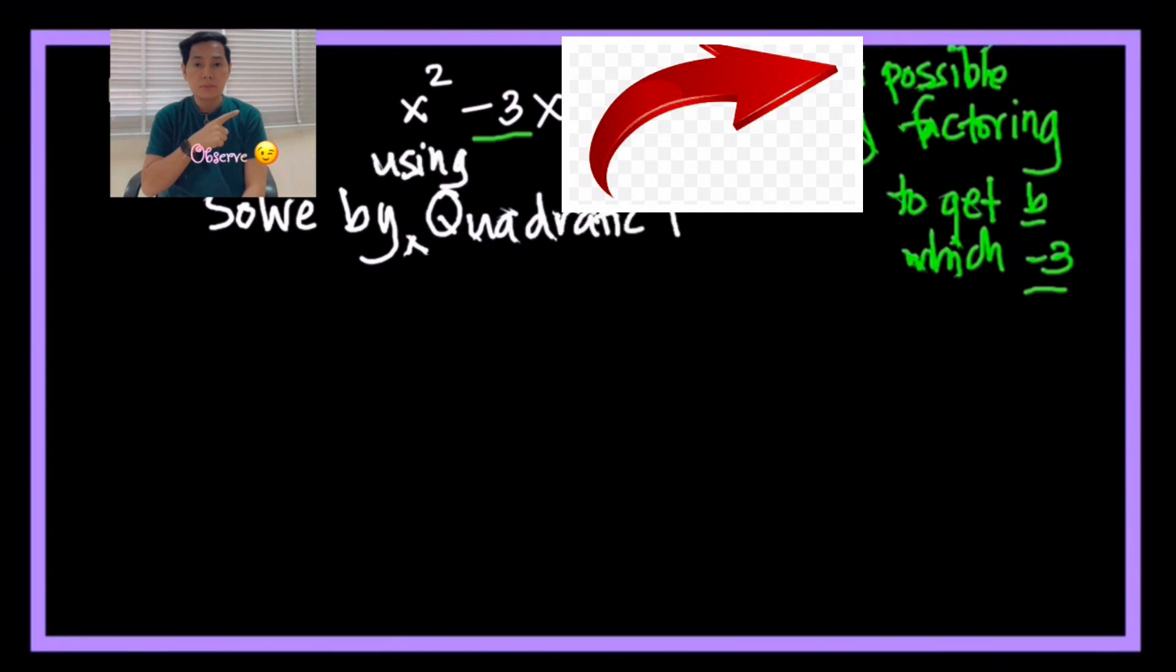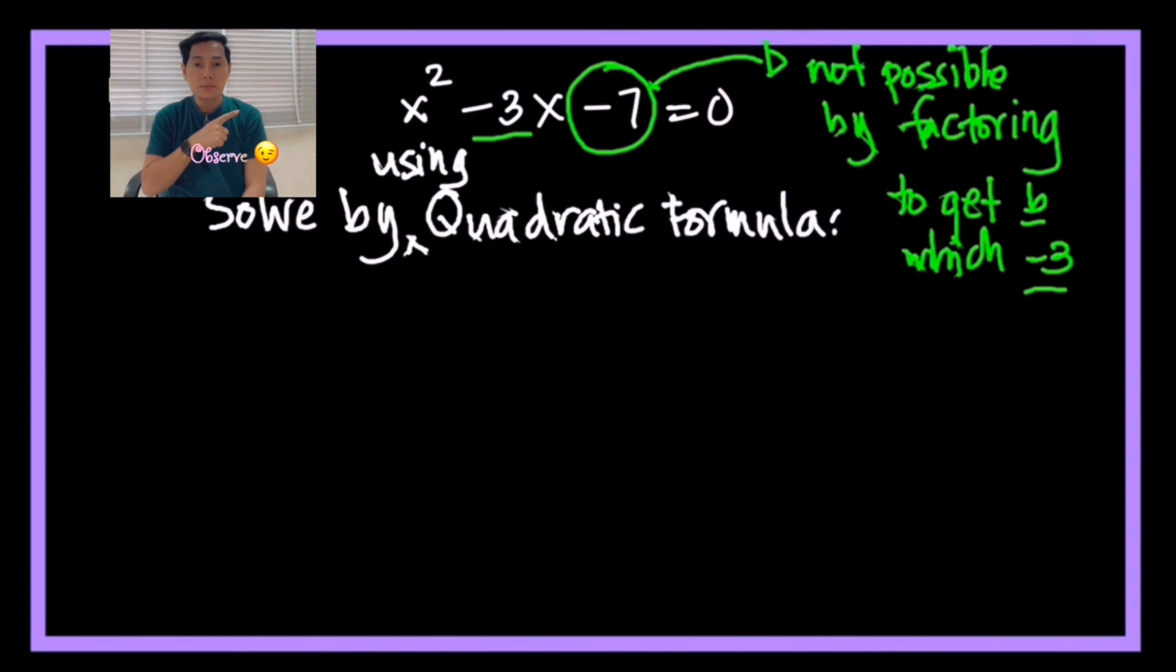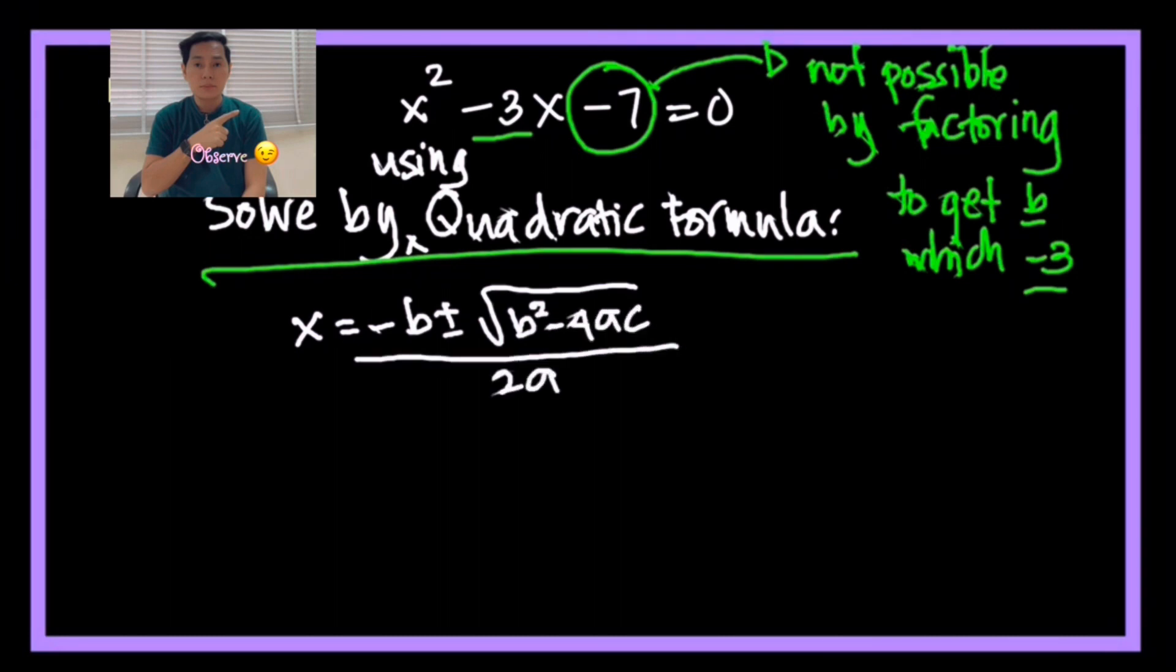By using quadratic formula, I'll be attaching here how we are going to derive the quadratic formula. Remember the quadratic formula is x = -b ± √(b² - 4ac) / 2a. The derivation will be attached here. You can just look at it.